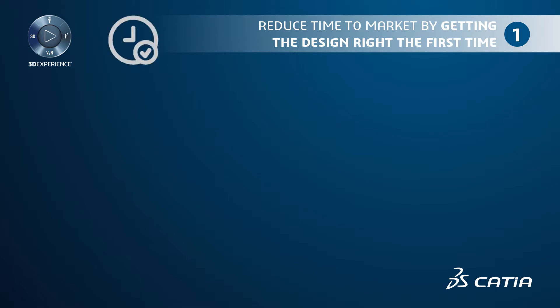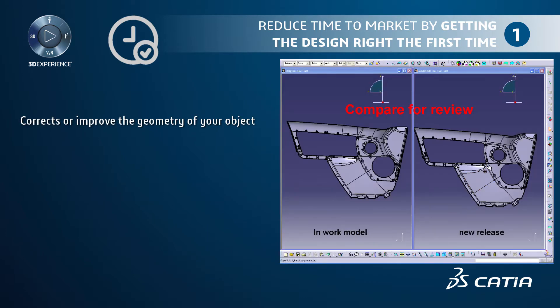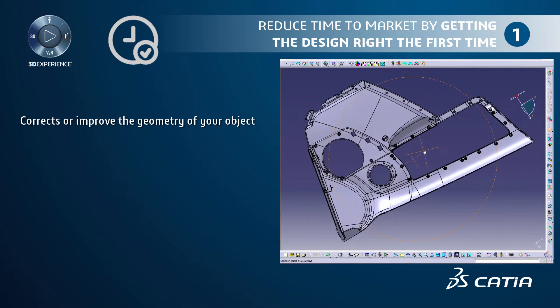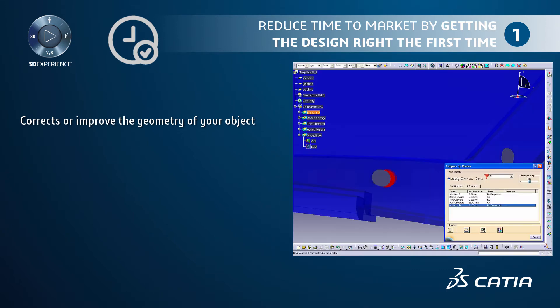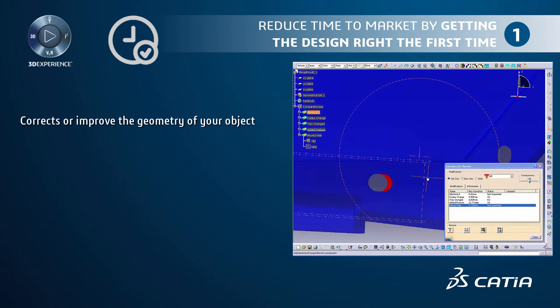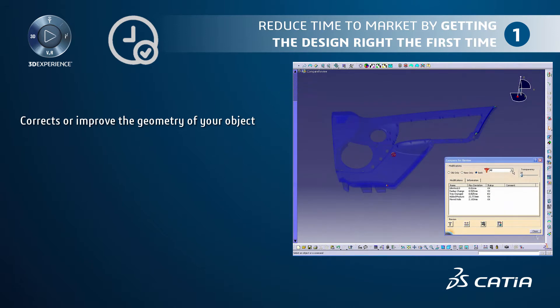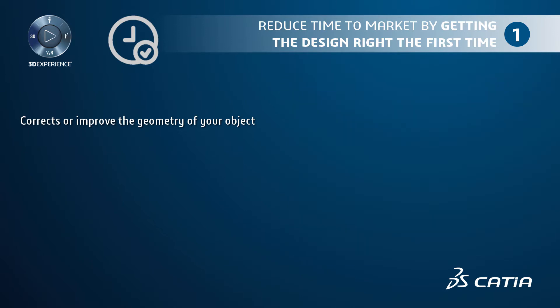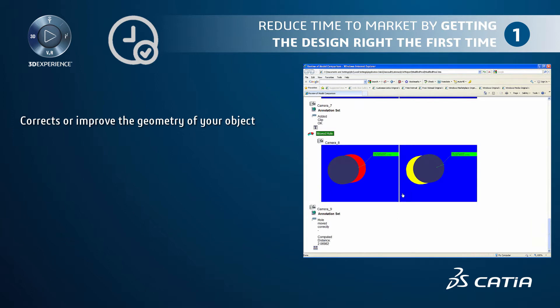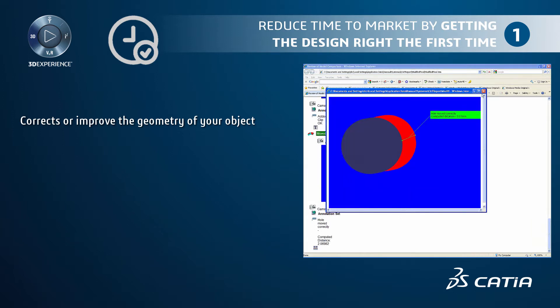Powerful CATIA capabilities reduce time to market by enabling you to get the design right the first time. You can correct or improve the geometry of your objects thanks to functionalities like Compare for Review, available in the Healing Assistant workbench. You will be able to check if a new release of a part has been modified, then review these modifications and validate or reject them. Color coding and transparency levels enable you to review the differences between the models.